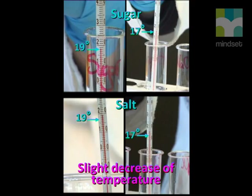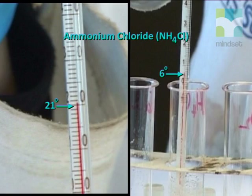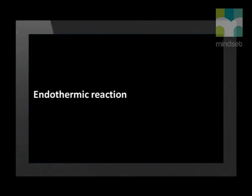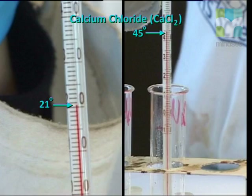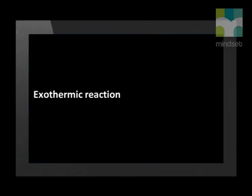Let's discuss what we observed. When we dissolved the sugar or the salt into water, the temperature decreased slightly. The temperature decreased a lot when the ammonium chloride dissolved. Reactions where the temperature decreases are called endothermic reactions. When we dissolved the calcium chloride into the water, there was a large temperature increase. The reaction where heat energy is given off is called an exothermic reaction.